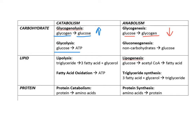Glycolysis is the breakdown of glucose, or one step in the full breakdown of glucose. In the presence of oxygen, cellular respiration occurs, entering the Krebs cycle and oxidative phosphorylation. The key point is that ATP is produced, which serves as an energy source for the cells.